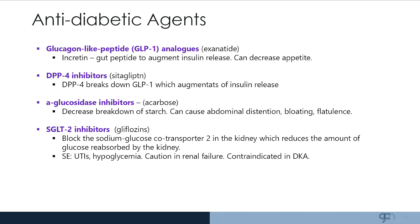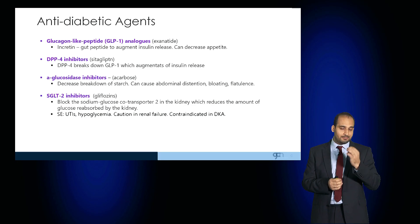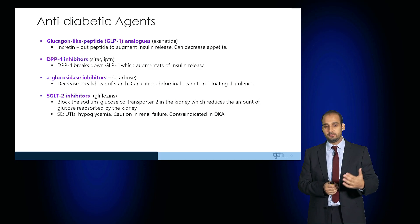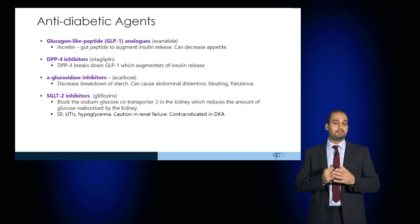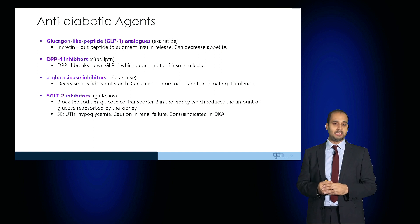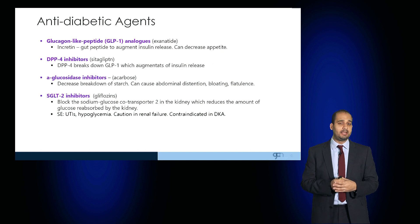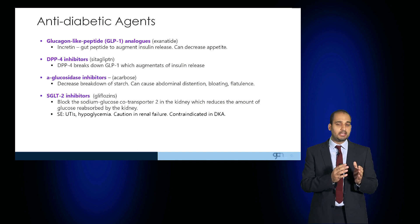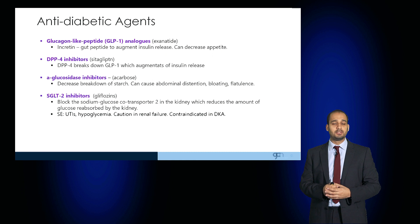SGLT-2 inhibitors such as the gliflozins block the sodium-glucose co-transporter 2 in the kidney, reducing the amount of glucose being reabsorbed. As this increases glucose concentration within the kidneys, which can serve as a medium for bacteria, patients can experience recurrent UTIs and hypoglycemia. This class must be used cautiously in renal disease and is contraindicated in diabetic ketoacidosis; notably, SGLT-2 inhibitors can cause euglycemic diabetic ketoacidosis, at which point they become contraindicated. Thank you for attending this Medicine Masterclass.